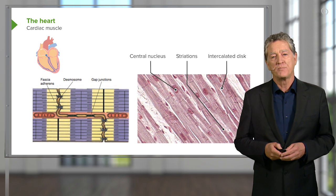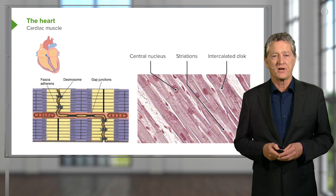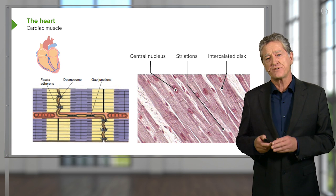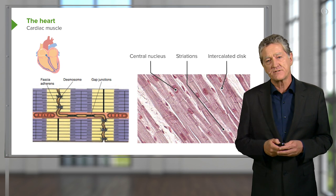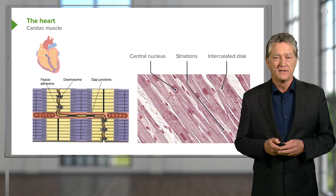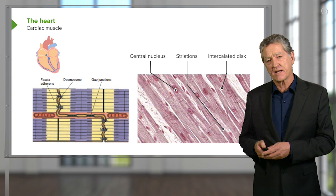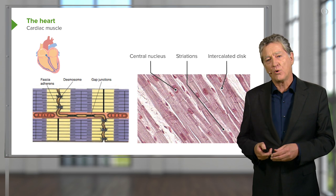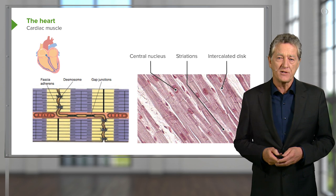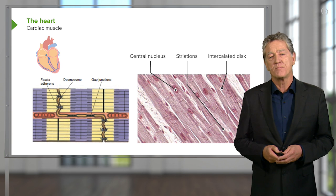The other type of component in these intercalated discs are gap junctions. These gap junctions allow the transmission of ions and different messages from one cell to the next. In so doing, contraction could be initiated at one part of the cardiac muscle and move all the way along through other cardiac muscles in a certain sequence, and that brings about the sequential pumping of the myocardium.